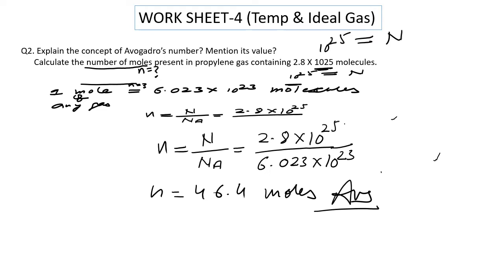Now the problem is: calculate the number of moles present in propylene gas containing 2.8 × 10²⁵ molecules.